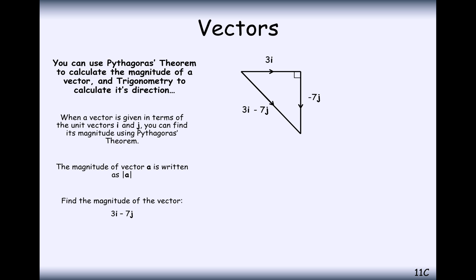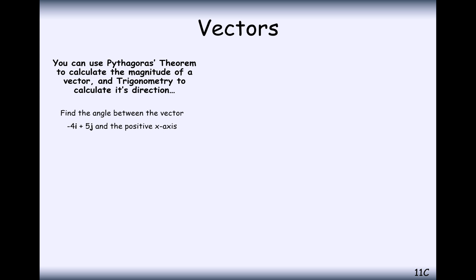So, 3i minus 7j will have a magnitude of 3 squared plus 7 squared, which will give us the square root of 58, or in other words, 7.62. So that's the magnitude of the vector. It's just a little bit of Pythagoras' distance, create the triangle and find your hypotenuse.